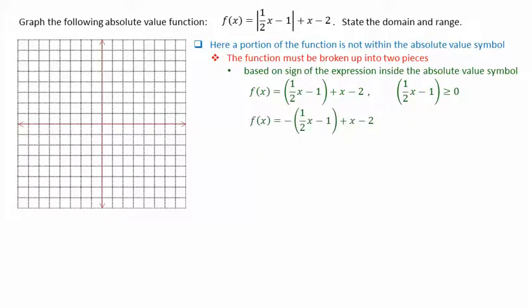The other piece will correspond to f of x equals negative 1 half x minus 1 plus x minus 2. Note that the plus x minus 2 outside of the absolute value symbol is not affected. This piece of our function corresponds to if 1 half x minus 1, the portion inside the absolute value, was negative or less than 0. If this is the case, we have to change it to positive by taking the opposite. We then graph each portion separately, but only within the corresponding domain for each piece.